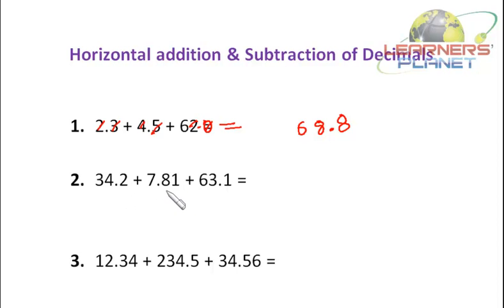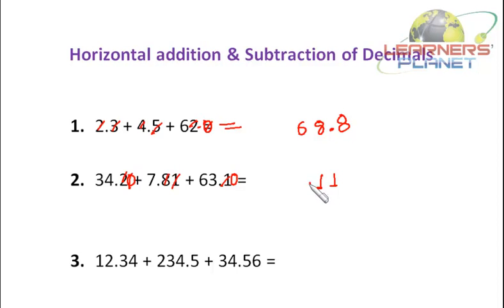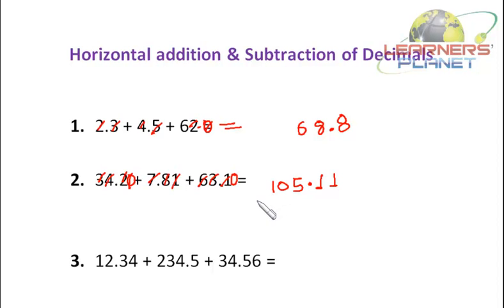Here we have 2 digits after the decimal, so I put a zero here and a zero here. Let's begin: it's 1, then 2 plus 8 is 10, and 1 makes 11 — I write 1 and carry 1. I put a decimal. That carried 1 plus 4 is 5, plus 7 is 12, plus 3 is 15 — I write 5 and carry 1. Then 3 plus 1 is 4, plus 6 is 10. The answer is 105.11.